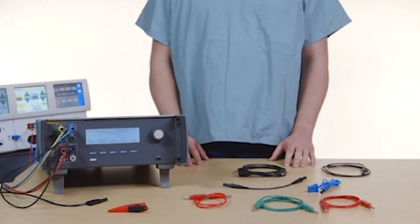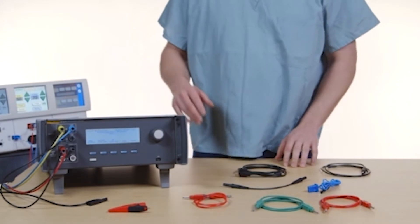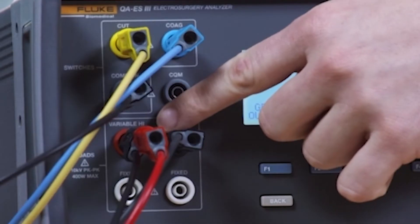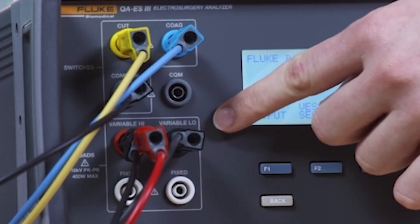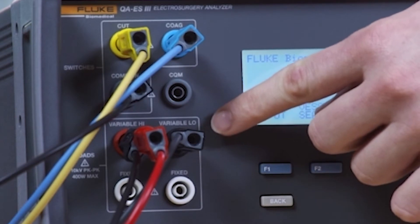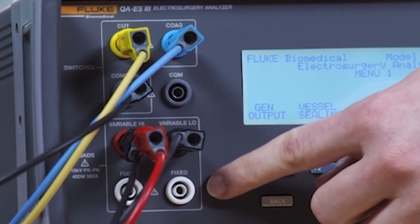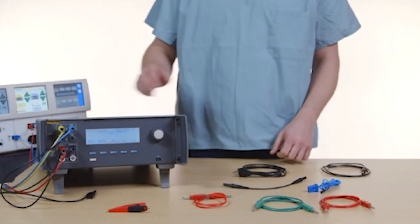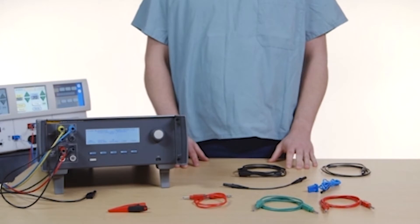For all HF leakage measurements, the QAES-3 places a 200 ohm load resistance from the variable high jack to the variable low jack and measures the leakage current through that load. Some measurements also use the fixed 200 ohm load at the 200 ohm jacks. The bipolar leakage measurement uses an additional internal 200 ohm load to earth that gets switched into the circuit.